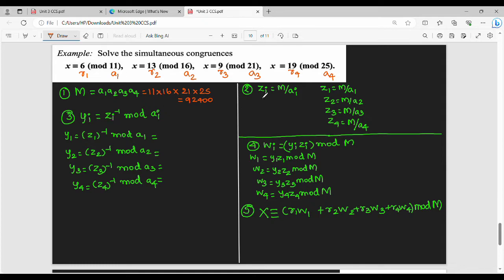Next, step two: I will compute zi, which is capital M divided by ai. So z1 is capital M by a1, z2 is M by a2, z3 is M by a3, z4 is M by a4. So first is z1: capital M value 92,400, a1 value 11, 92,400 by 11 is 8,400. Capital M value 92,400, a2 value 16 gives 5,775. Capital M value 92,400, a3 value 21 gives 4,400.